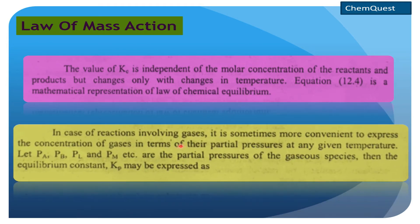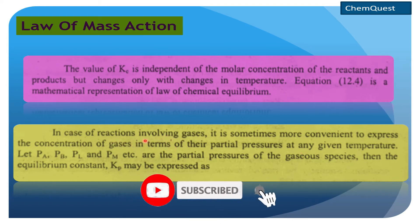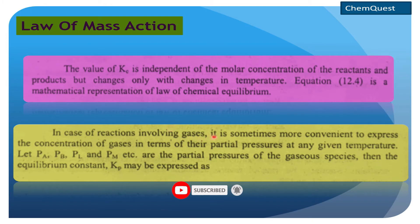In case of reactions involving gases, it is sometimes more convenient to express the concentration of gases in terms of their partial pressures at any given temperature. ابھی تک ہم نے Law of Mass Action کی جتنی بھی forms study کی ہیں اس میں ہم نے reactants کو liquid form میں لیا ہے، اس لیے mol per dm³ کی concentration discuss کی ہے۔ But if we have reactants which are gases, تو ہم ان کی concentration کو partial pressure کی form میں express کریں گے۔